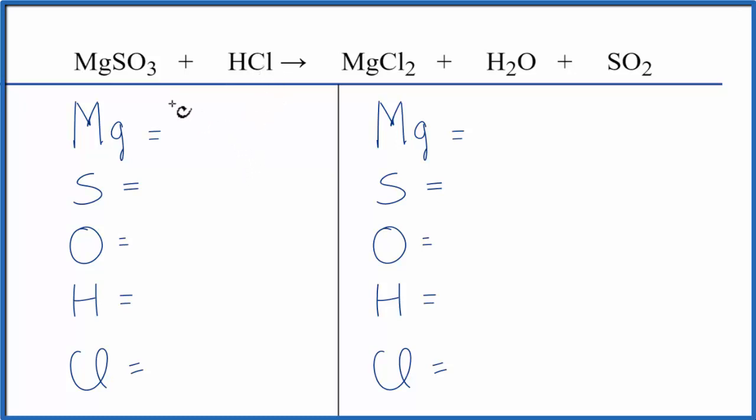Let's count the atoms up on each side of the equation. We have one magnesium, one sulfur, three oxygens, one hydrogen, and one chlorine.